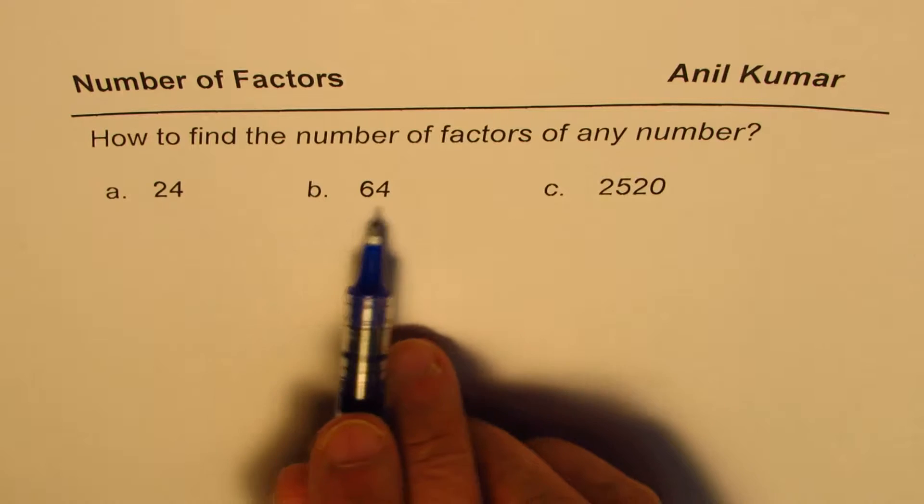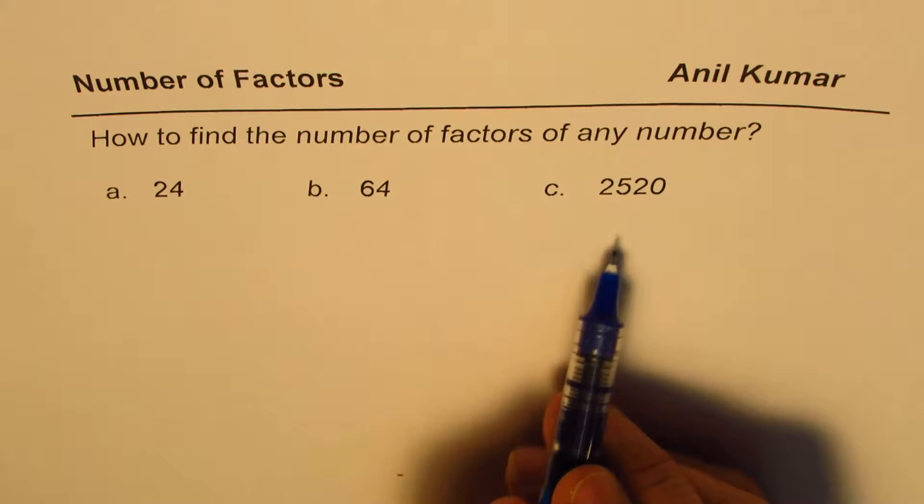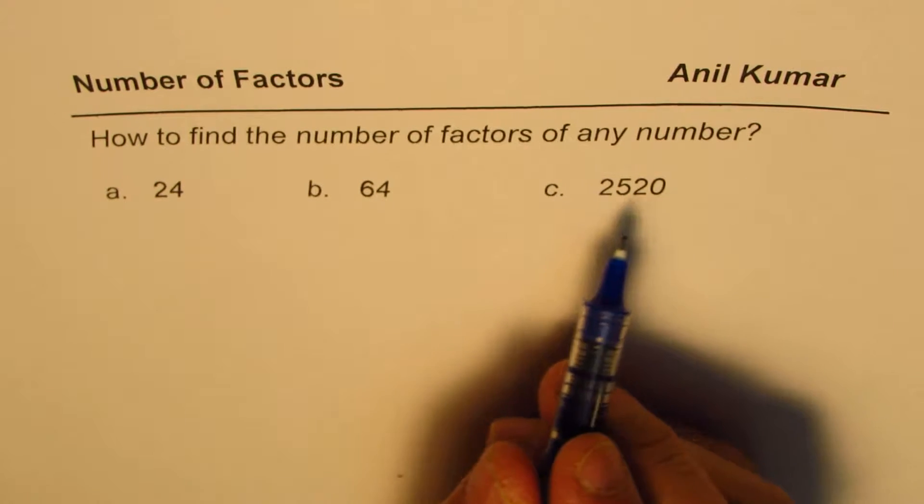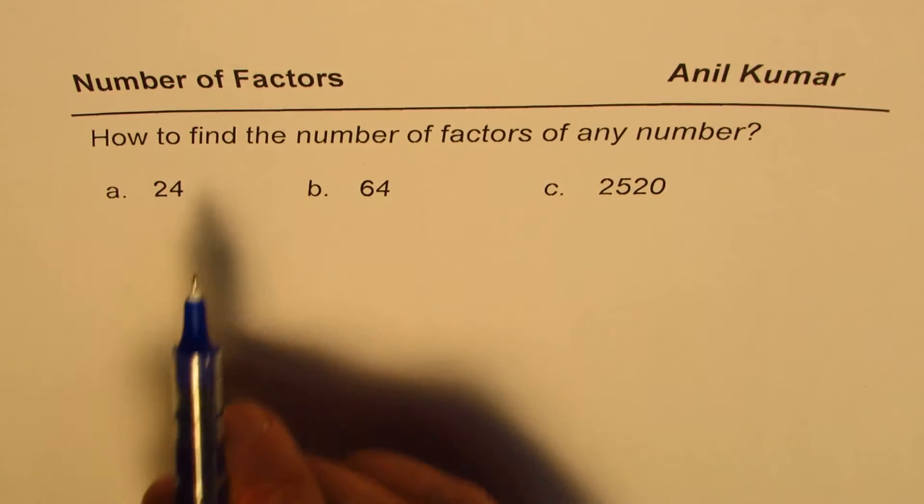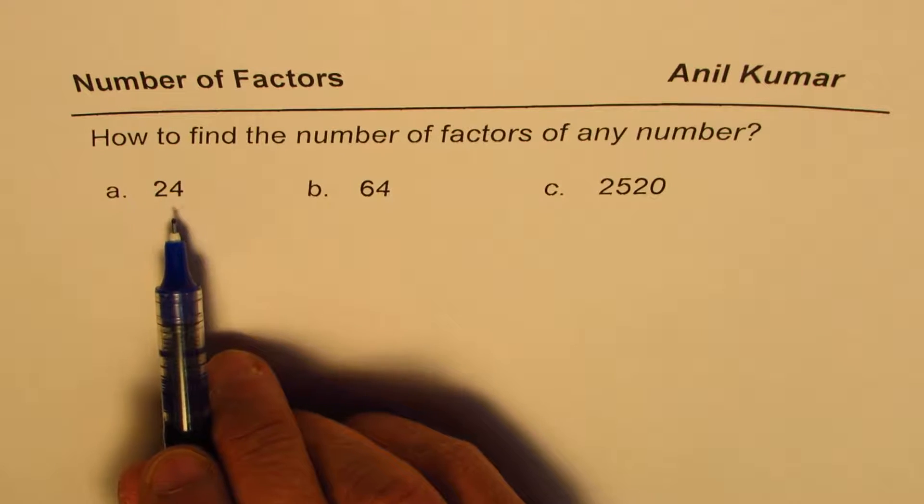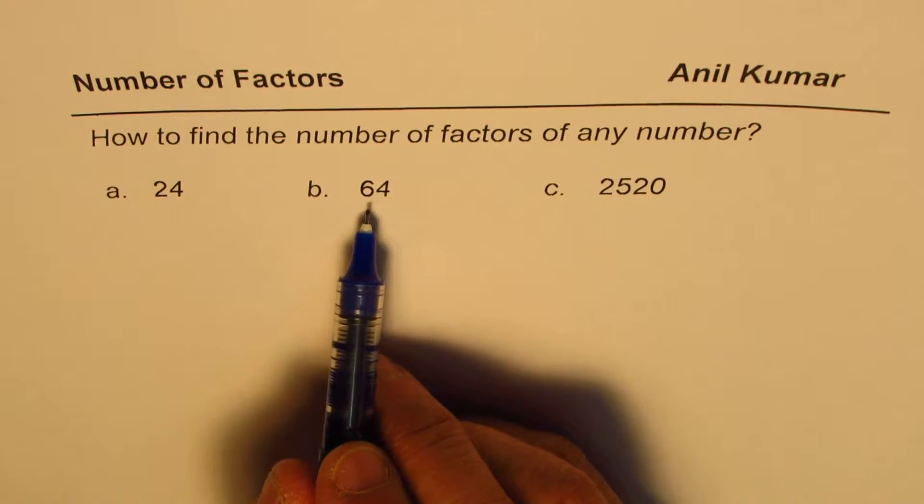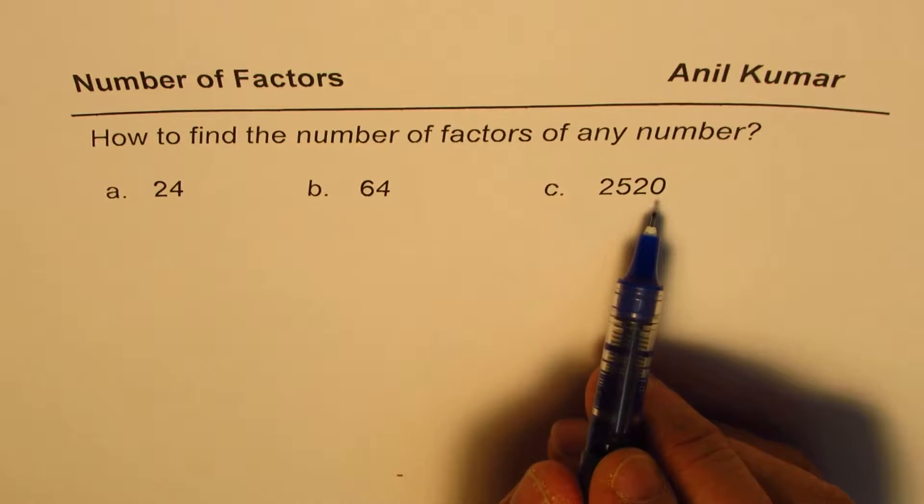We'll begin with small numbers and then find number of factors for this number 2520. Now that was given to me by my student and to appreciate the concept, I've taken up two smaller numbers. So let's find how many factors 24 has, how many factors 64 has, and how many factors will 2520 have.